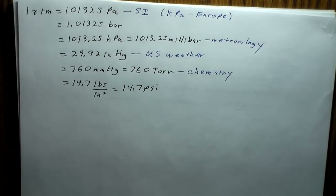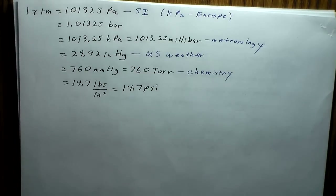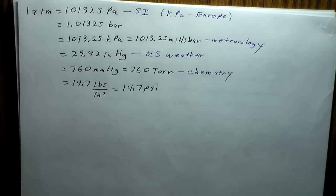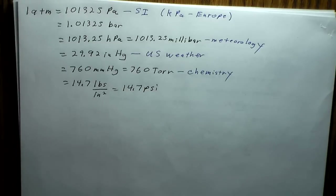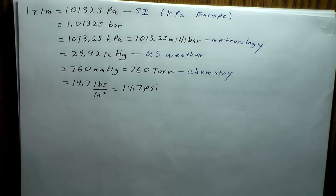The nice thing about millimeters of mercury or Torr is that if you have a barometer in the lab, you can literally just read the value directly off it. Nowadays it's hard to find mercury barometers in labs because mercury is a hazardous substance and people tend to break things, so electronic barometers are used instead.